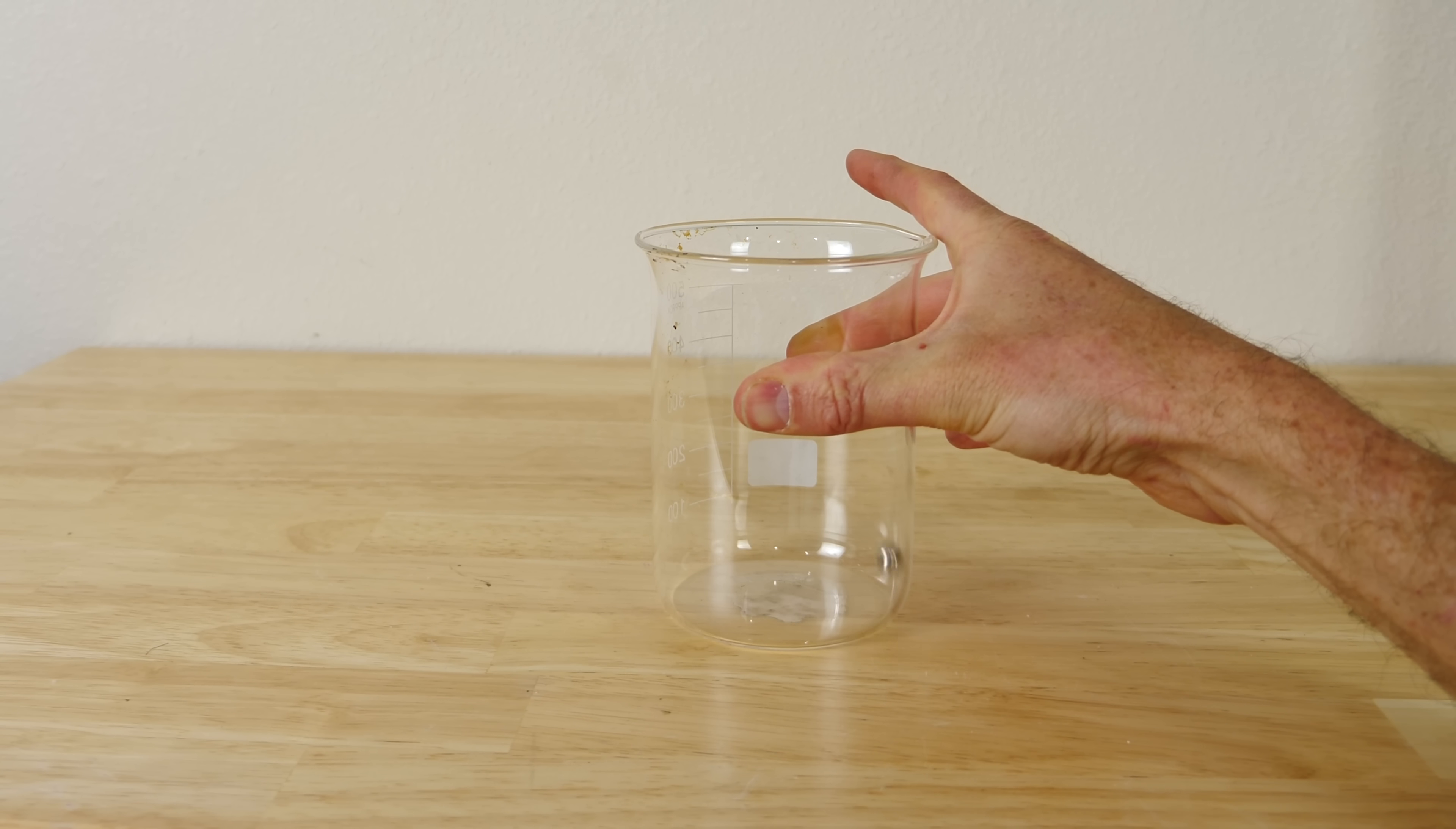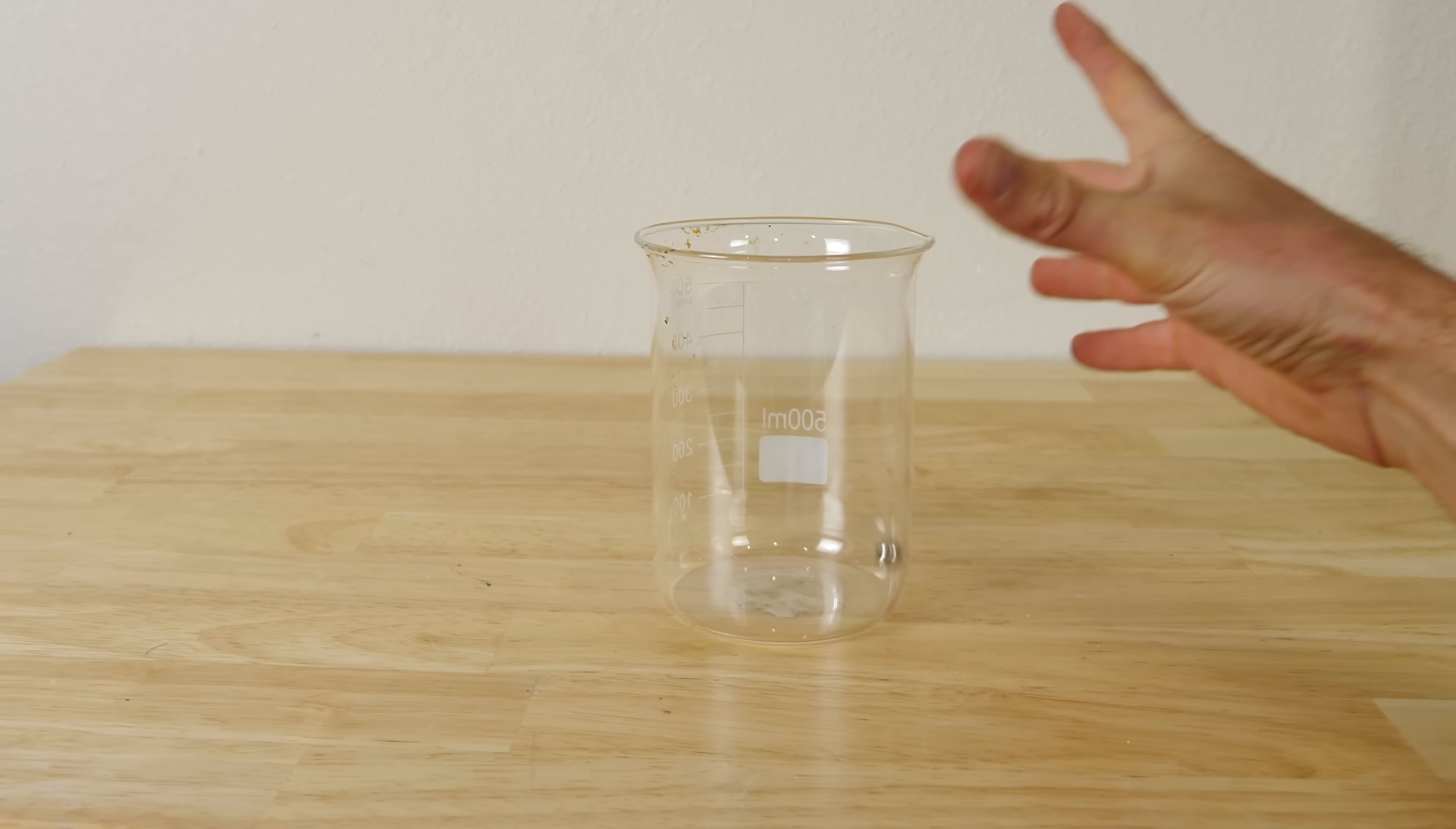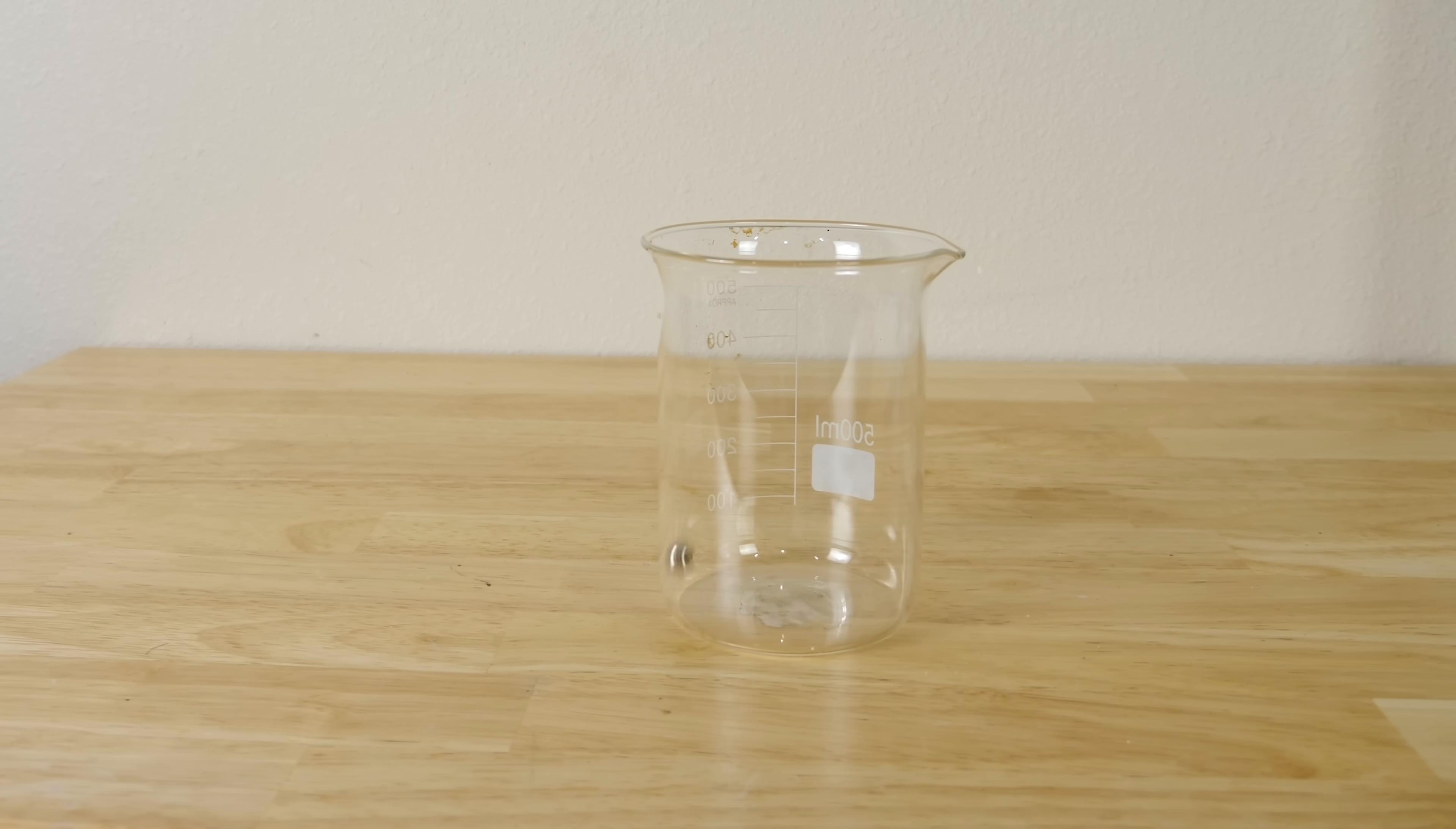So how is this working? This seems impossible. I'm not adding any energy to it seemingly, but it's continuing to spin around in a circle and stay suspended above the surface like this. So how was I actually doing this?